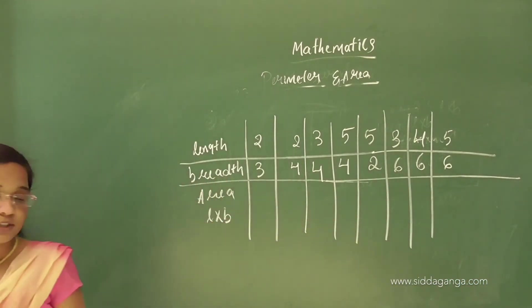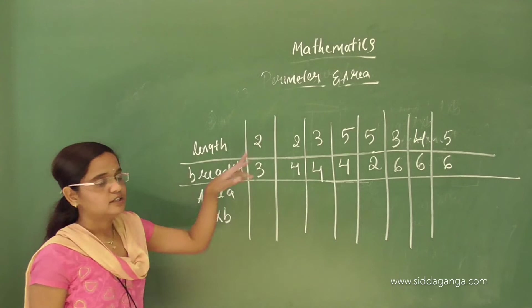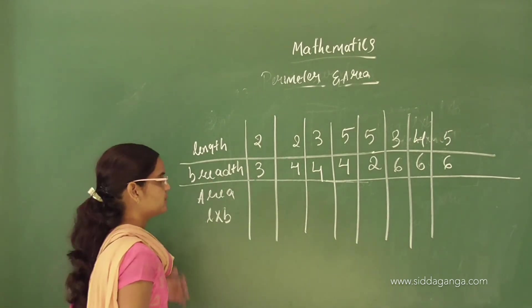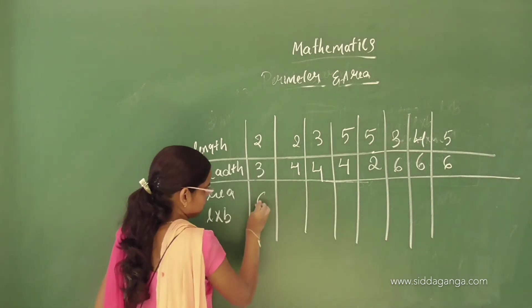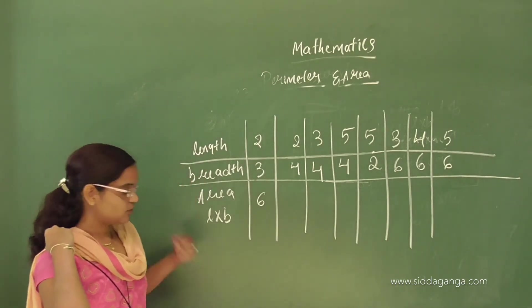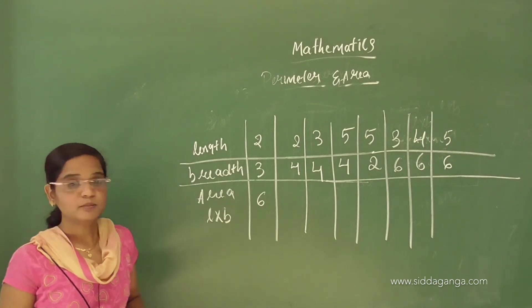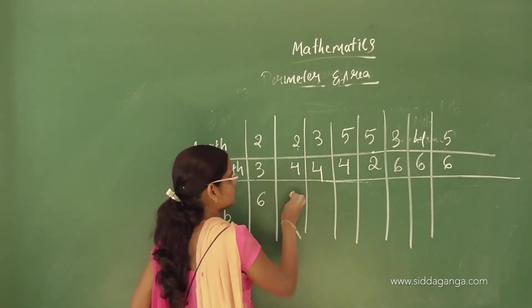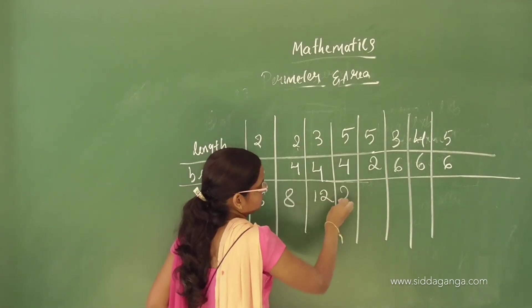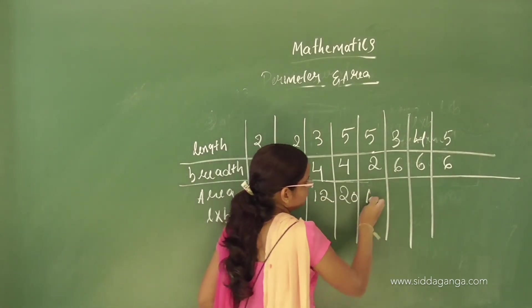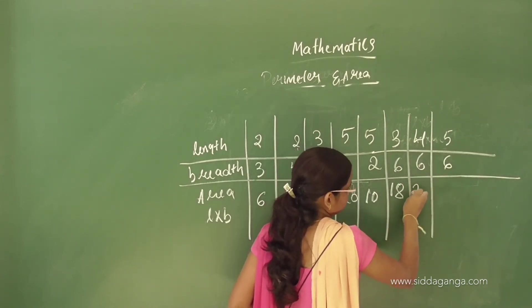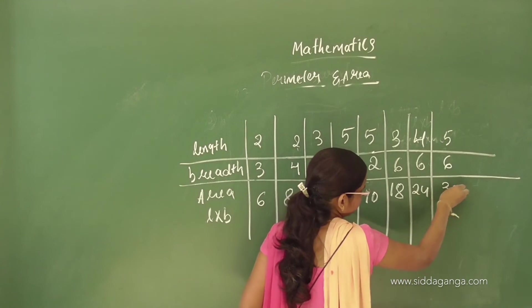According to the area formula, we multiply length and breadth. The pairs are: 3 and 2 gives 6; 4 and 2 gives 8; 4 and 3 gives 12; 4 and 5 gives 20; 5 and 2 gives 10; 6 and 3 gives 18; 6 and 4 gives 24; 6 and 5 gives 30.